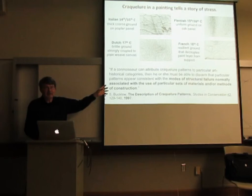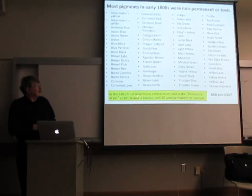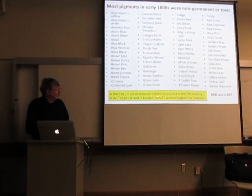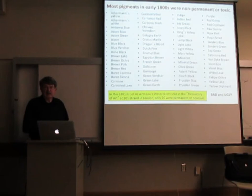The 1800s were a really bad time period for pigments. Here's a list from a London shop in 1801 — these are watercolors, but the binder type doesn't matter. Of all the pigments listed, only 20% were permanent or non-toxic. Bad and ugly.